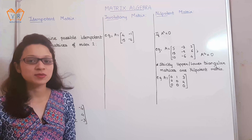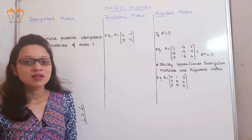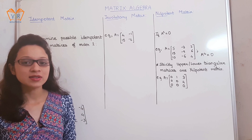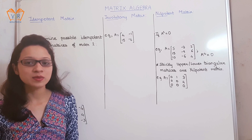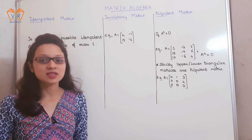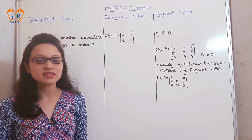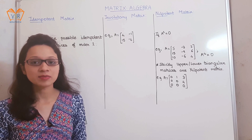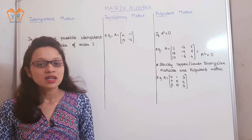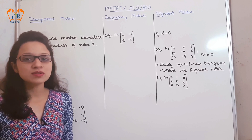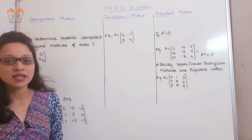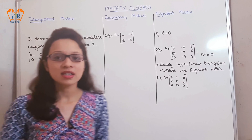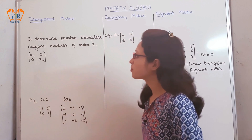Hi guys, I am Suprava. We know the types of matrices — those are rectangular, zero or null, and square matrix. The square matrix is subdivided as diagonal, scalar, identity or unit, and triangular matrix. In this video, we will see three more types of square matrices: idempotent, involutory, and nilpotent matrices. Let us understand each one in detail.